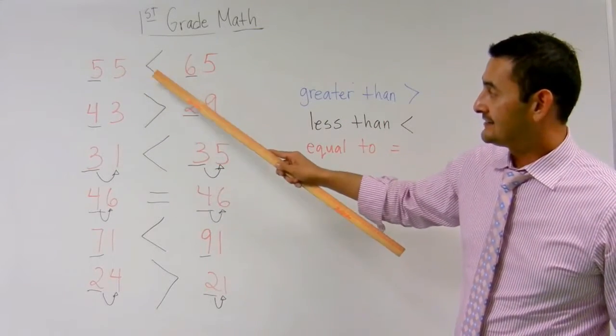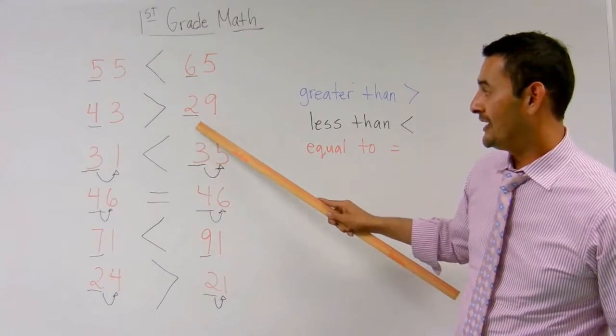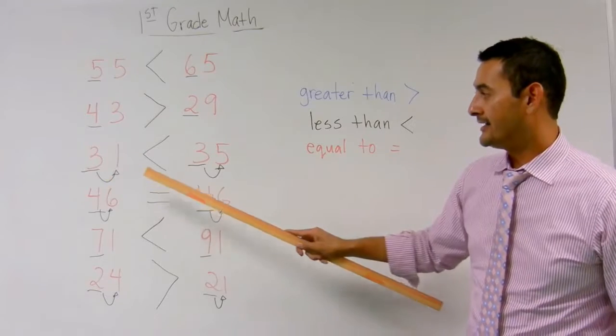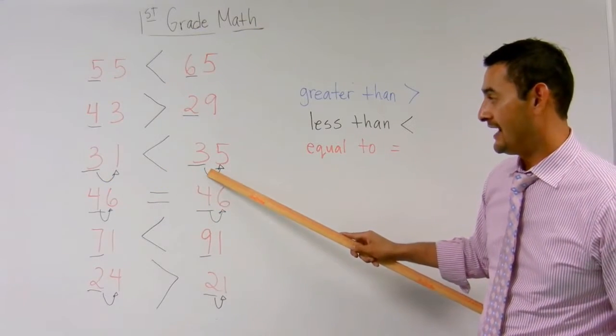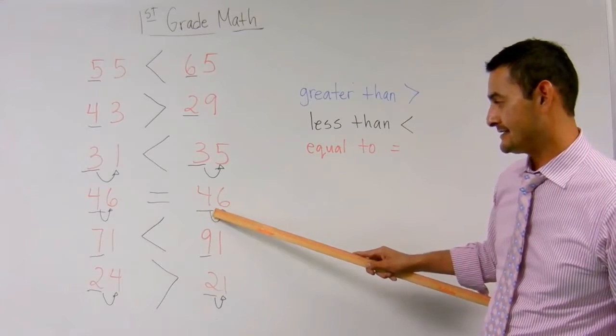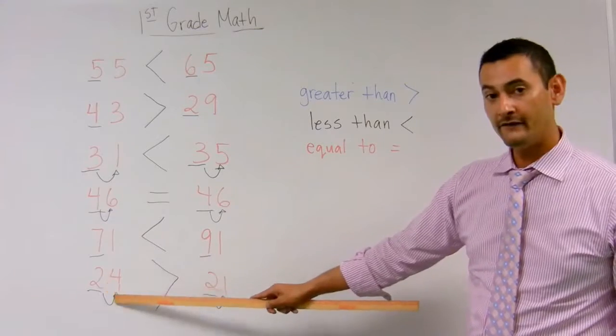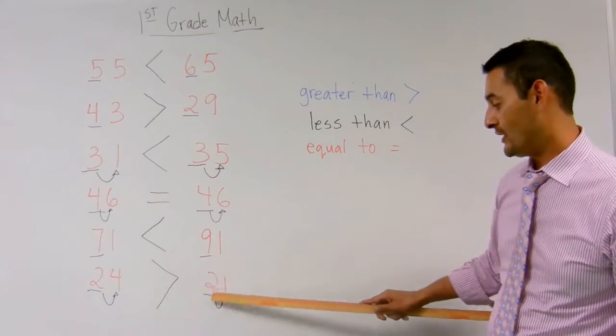55 is less than 65. 43 is greater than 29. 31 is less than 35. 46 is equal to 46. 71 is less than 91. And, 24 is greater than 21.